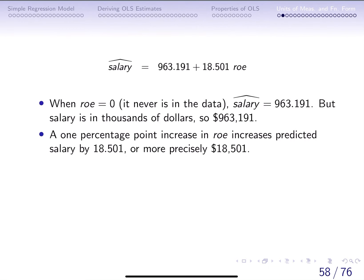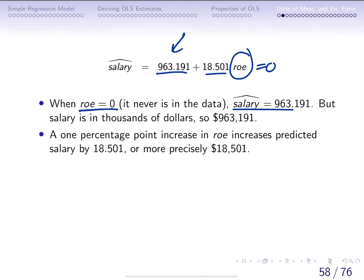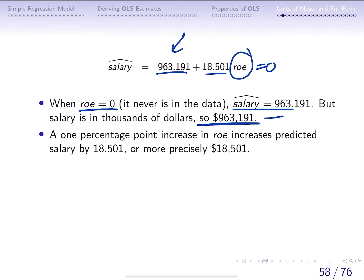Let's focus on the interpretation. When interpreting the intercept, this tells us what happens when X equals zero. Even though return on equity in this dataset is never zero, we can still make a statement about it. So if ROE — return on equity — is zero, then the salary is 963, but that's in thousands of dollars. So the prediction is: if your return on equity is zero, as a CEO you're still making $963,191 on average according to this model.